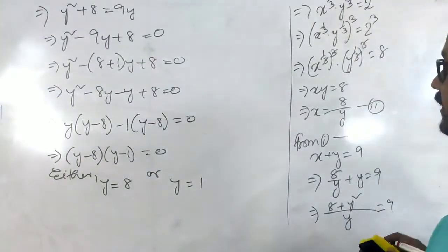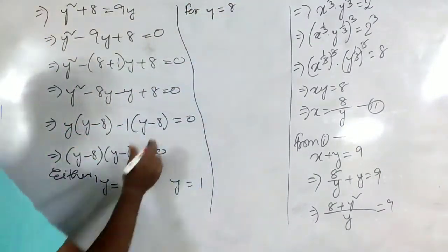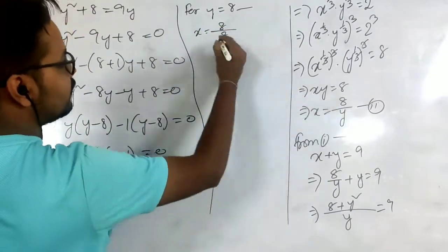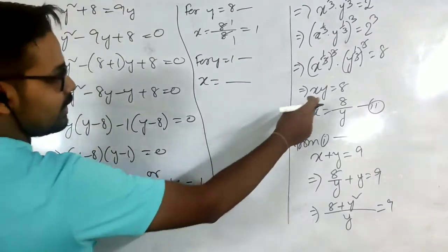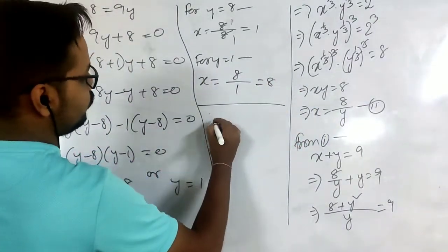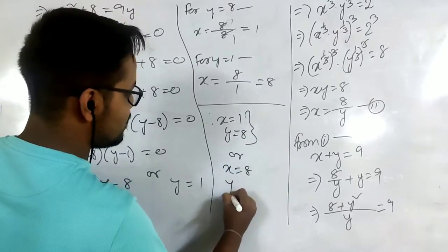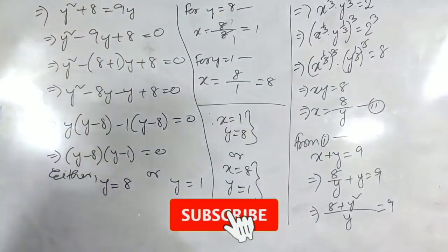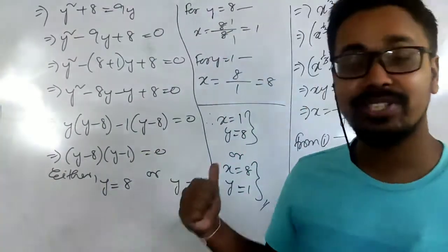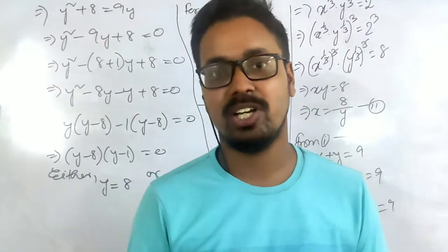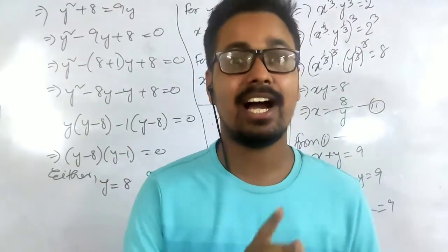For y = 8, x = 8/8 = 1. For y = 1, x = 8/1 = 8. Therefore the values are x = 1, y = 8 or x = 8, y = 1. As mentioned, the beginning of these sums is really important — if you get the beginning right, the whole sum will be correct. Now we move on to the last type: question number 20, which has four sub-parts all following the same method.